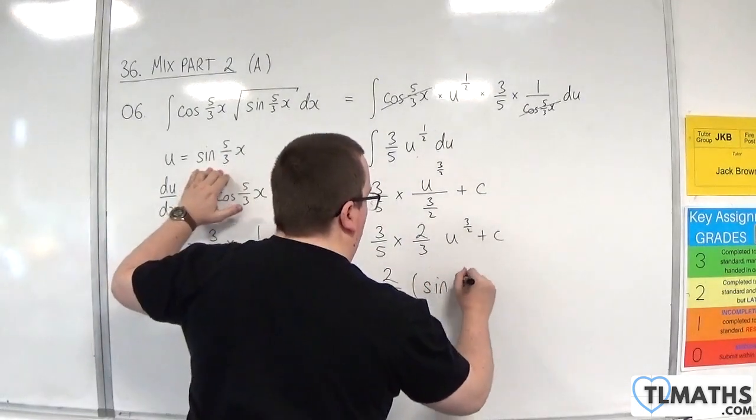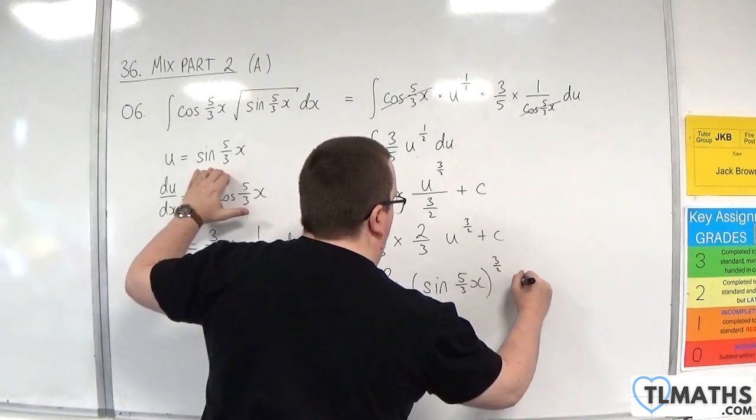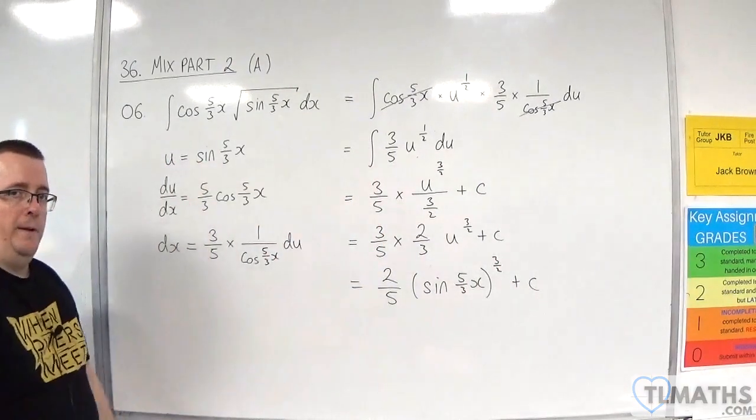u was sine of 5 thirds x. So that's sine of 5 thirds x to the 3 halves plus your constant c.